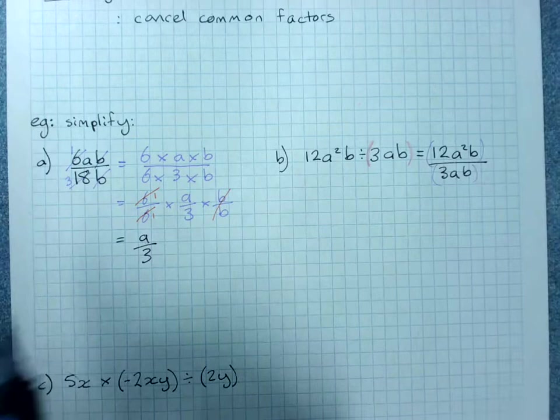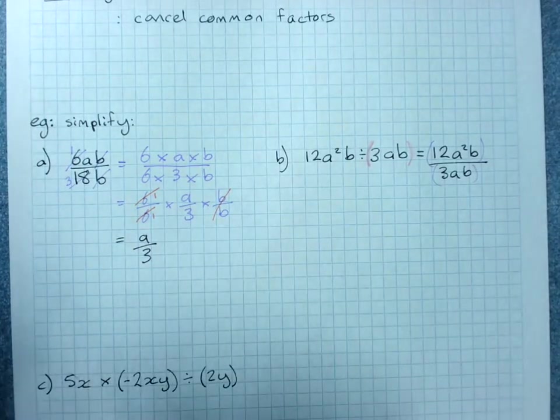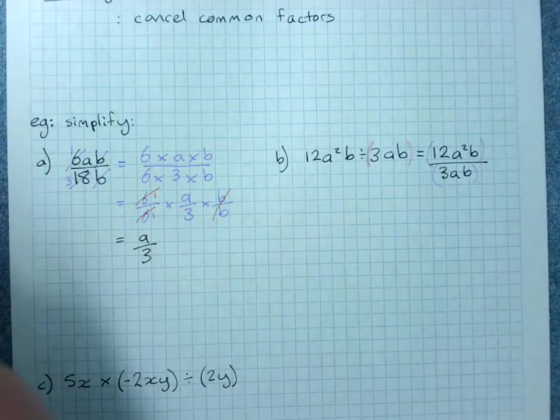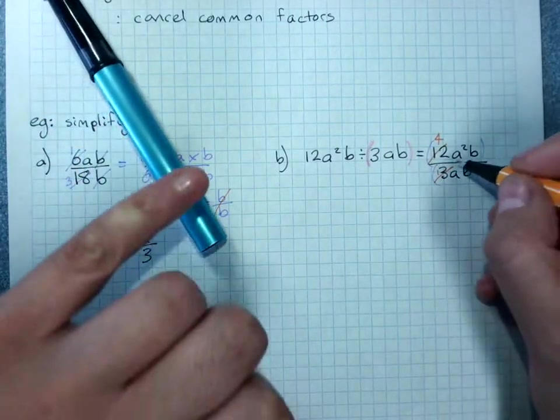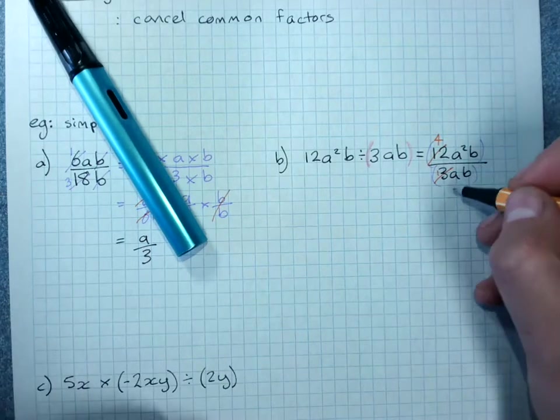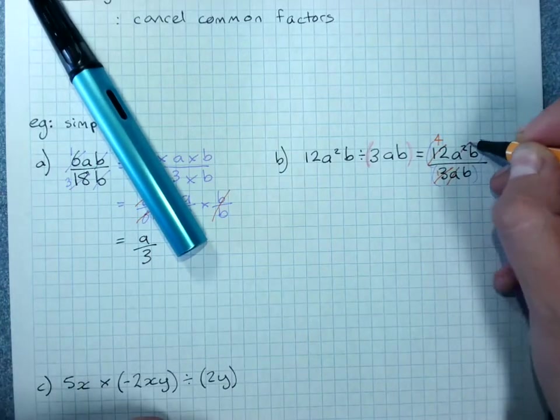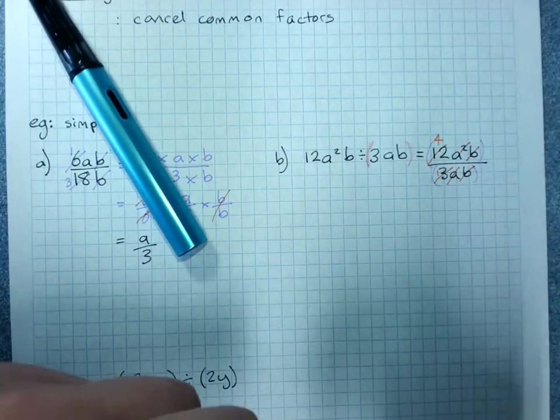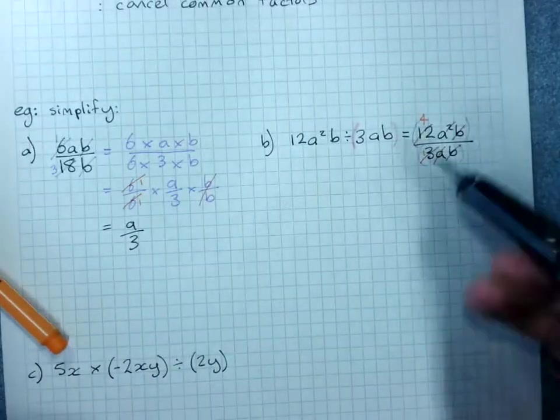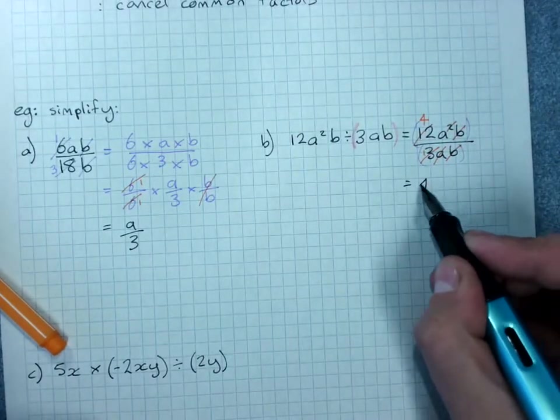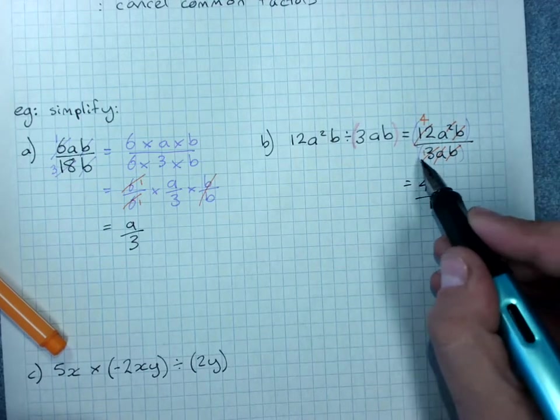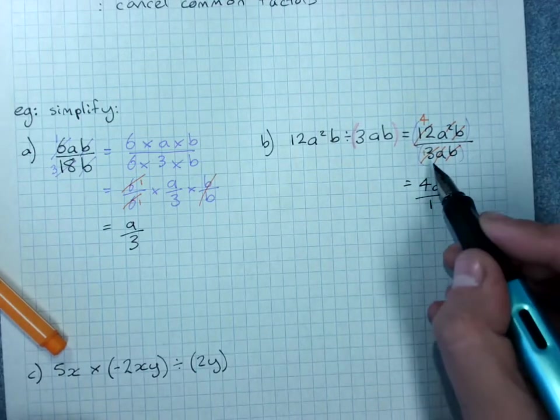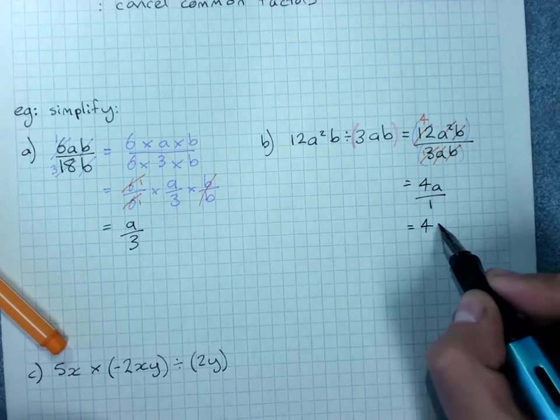So once we've got this, then we cancel common factors. I'll try to find a pen color that works. 3 goes into 12 and 3, leaving me with 1 and 4. a squared divided by a leaves me with just a on the top and the b's cancel out, leaving me with 4 times a, which is 4a on the top and 1 on the bottom because everything else cancelled down to 1, 1 times 1 times 1. So this is 4a.